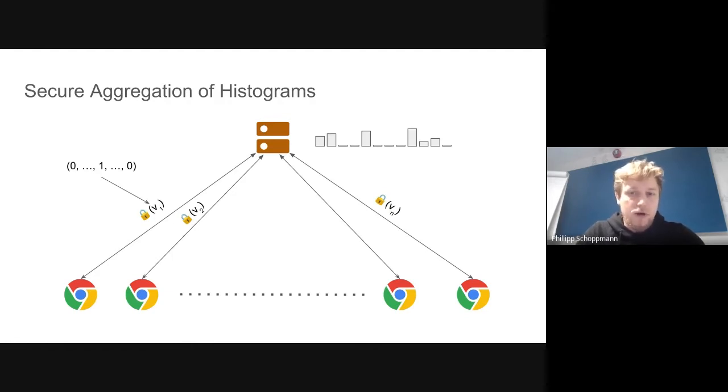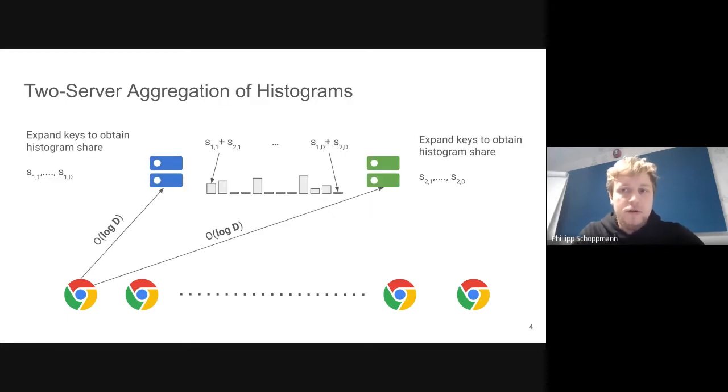How can we get around these limitations? One approach is, instead of a single server, to use two servers. Here we have the assumption that these two servers do not collude with each other, so that means they could be different organizations in different jurisdictions.